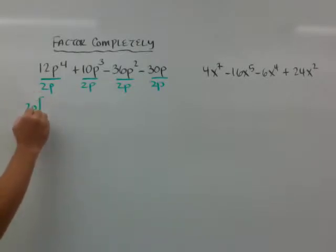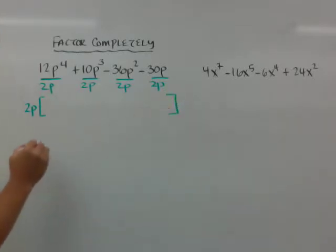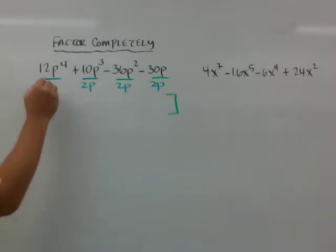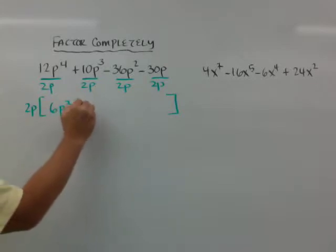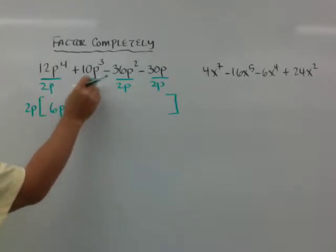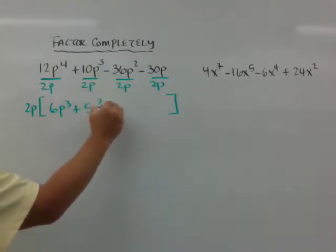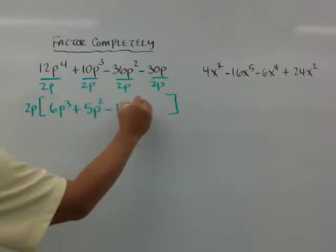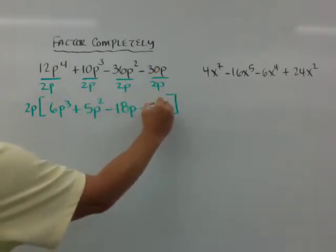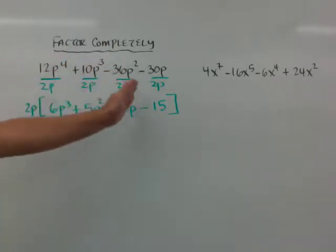I'm left with 6p to the third plus 5p squared minus 18p minus 15. All I did was divide each one of these and drop it down.